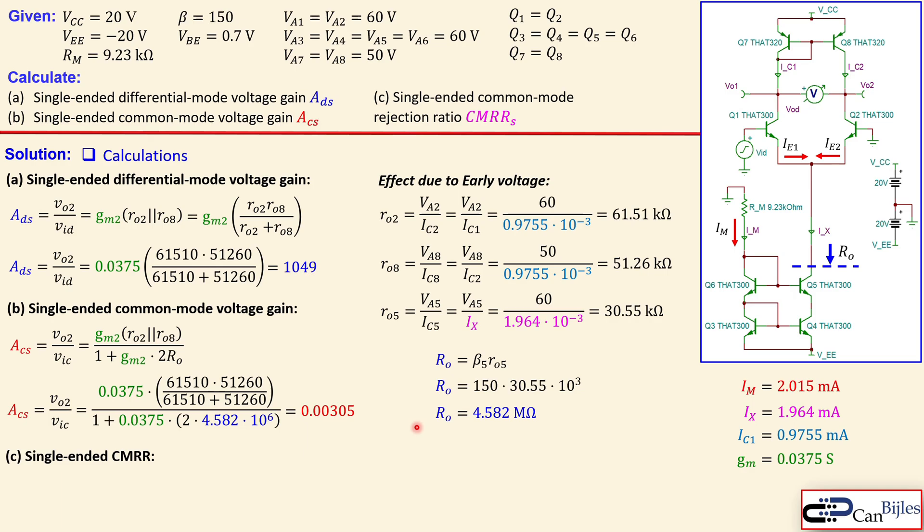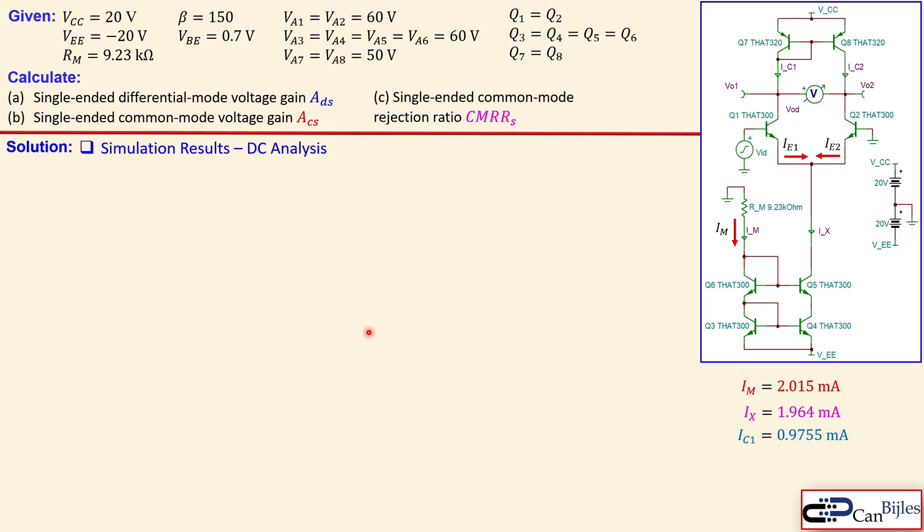Now the single-ended common mode rejection ratio. That is again the ratio of the differential mode voltage gain over the common mode voltage gain. We know that. We calculated it already. And that will give you 344 times 10 to power 3. And convert that to the dBs. That will give you 110.7 dBs. We have now done the necessary calculations.